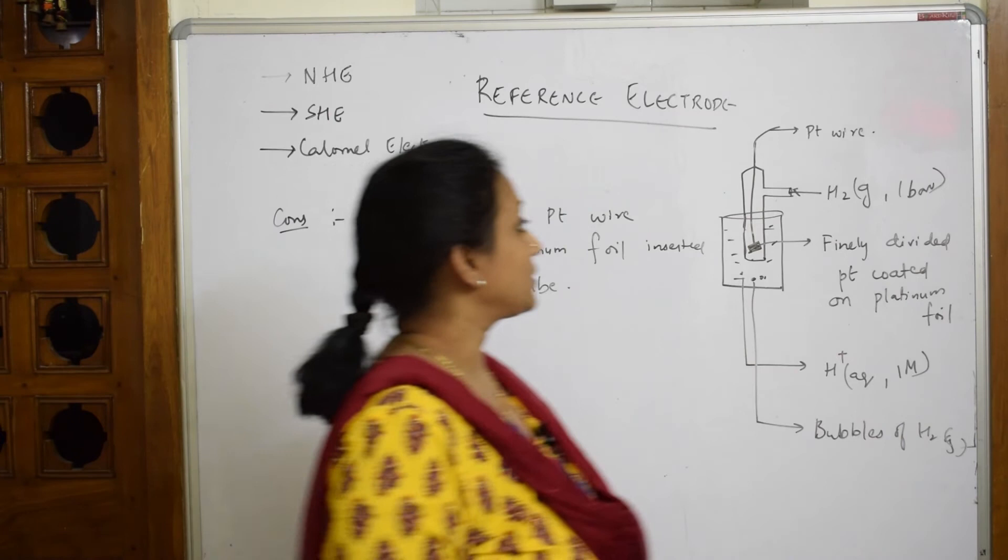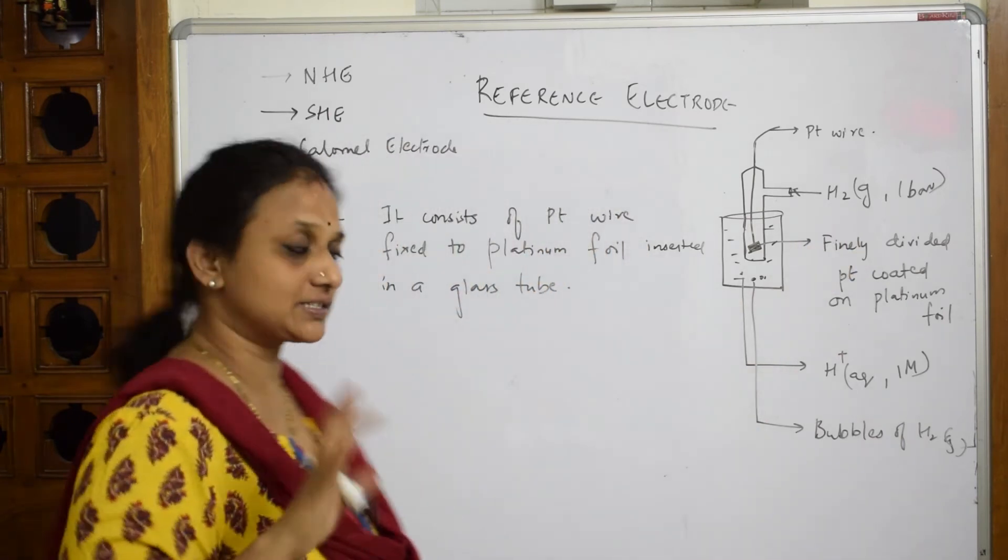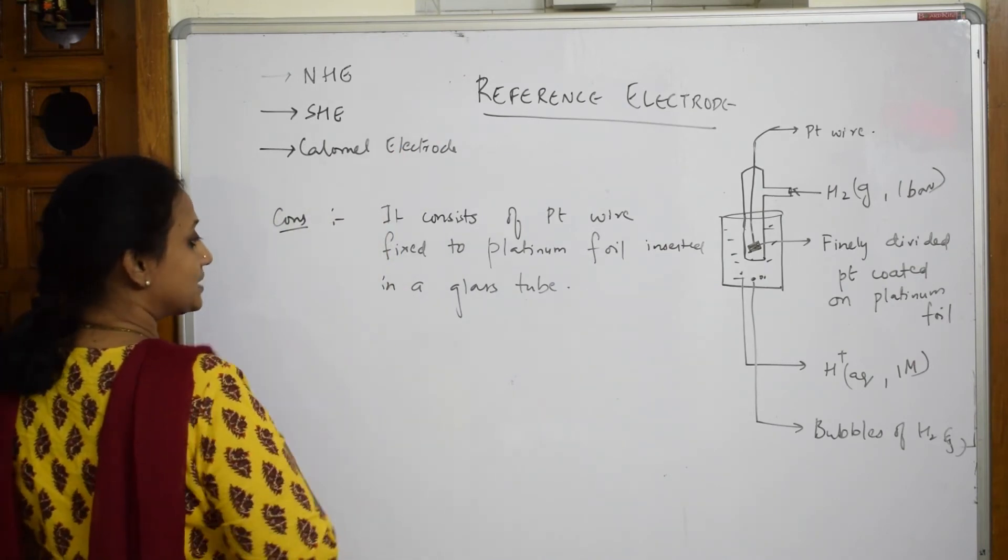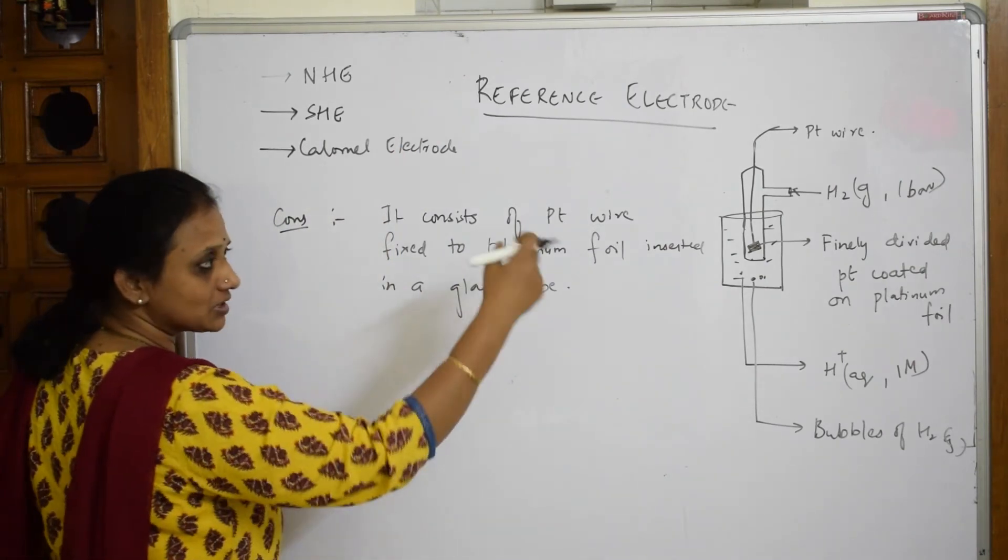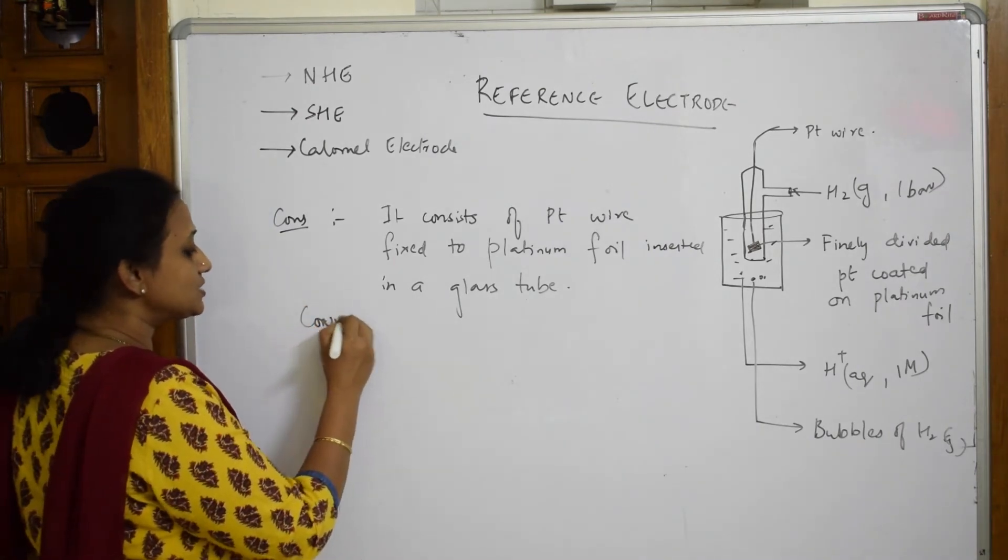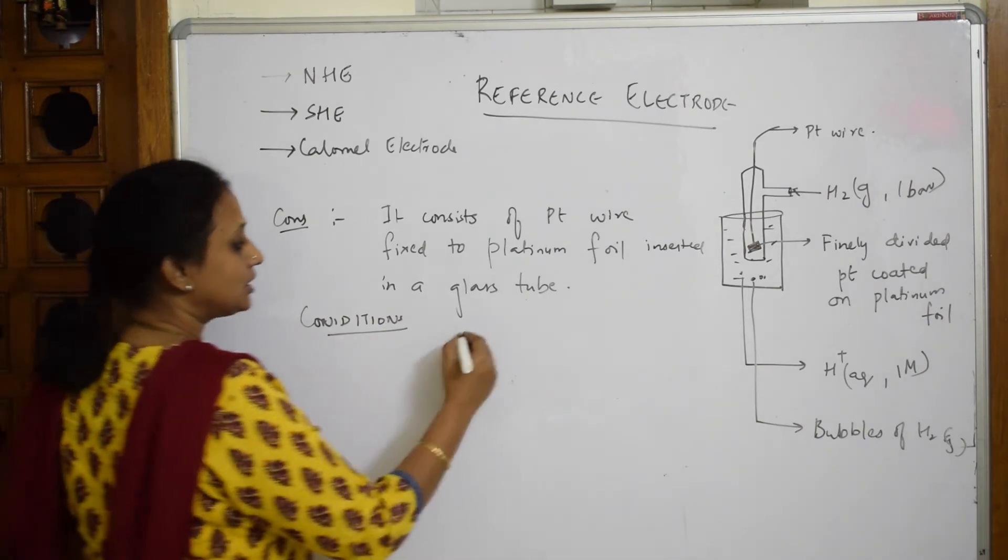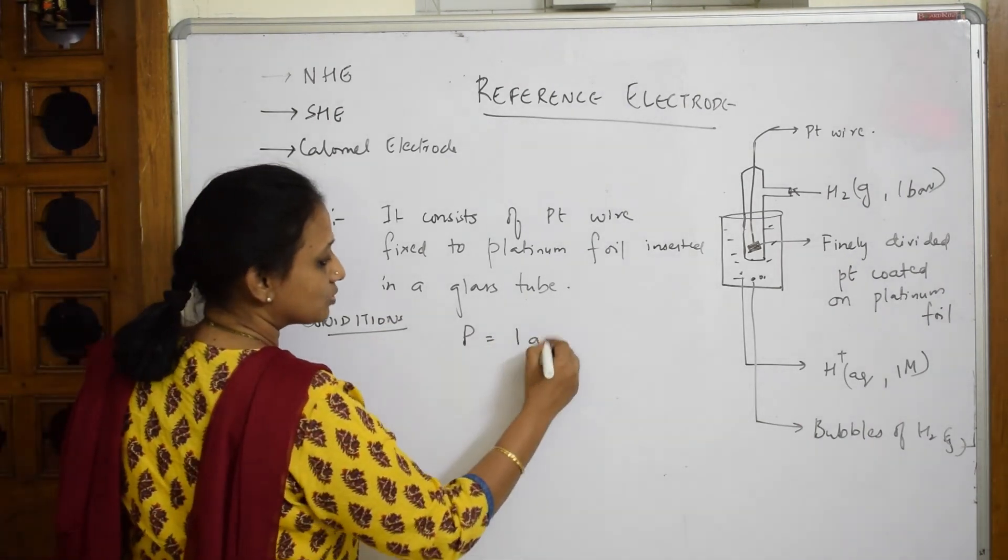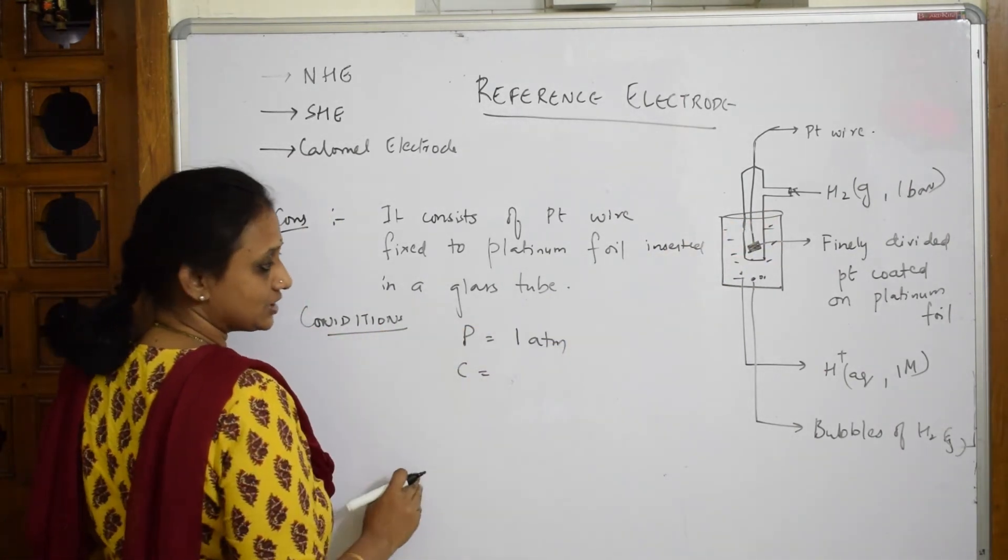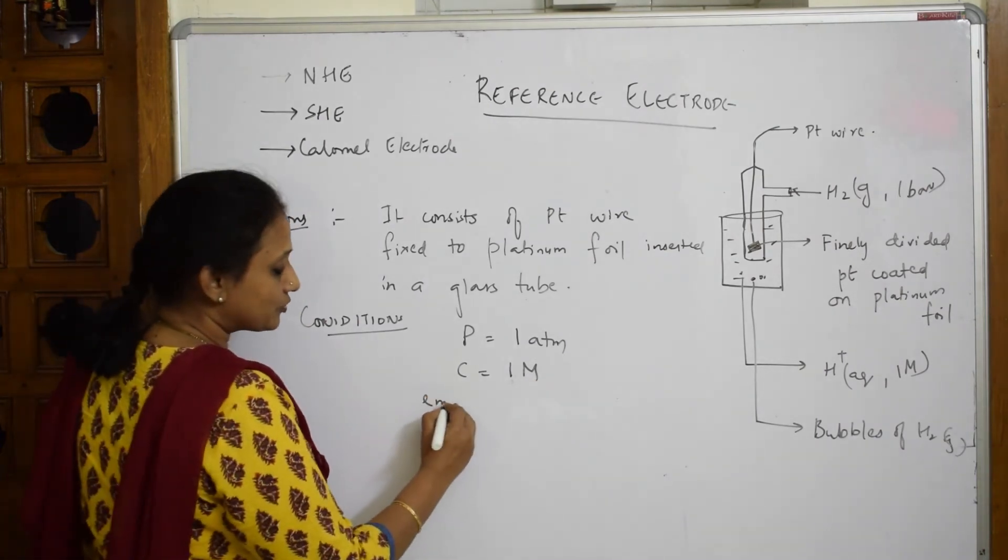Most importantly, on one side you are sending hydrogen gas into the glass tube. What conditions are maintained? First, the pressure maintained is 1 atmospheric pressure. The concentration maintained for hydrogen is 1 molar. The EMF of the cell is 0.00 volts.